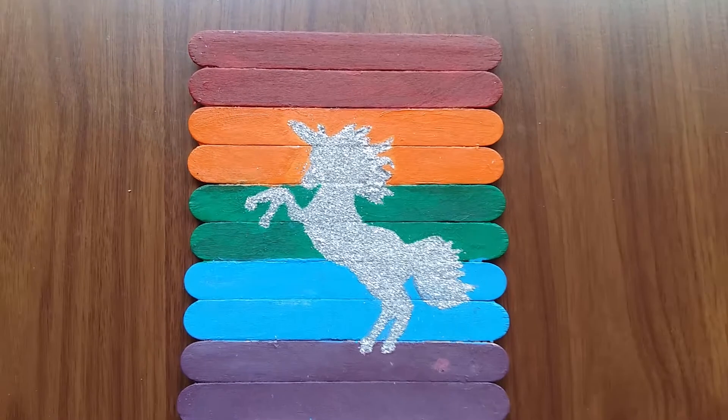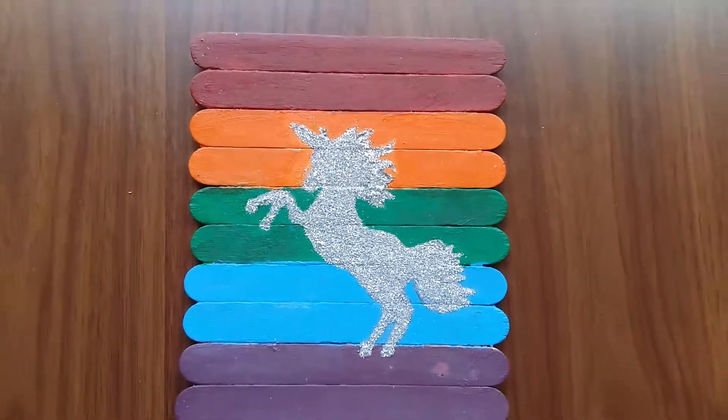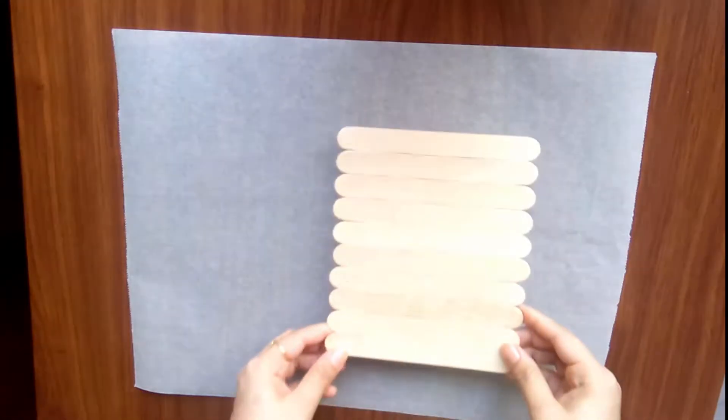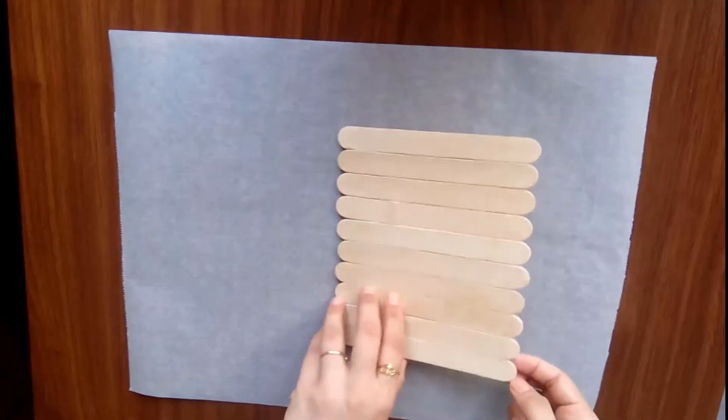Hi guys, welcome to my channel. Today I'm going to show you how to make this popsicle canvas art. Hope you guys like it, so let's get started. I'm placing parchment paper so that I don't paint on my desk. You can also use tissue paper or a newspaper.